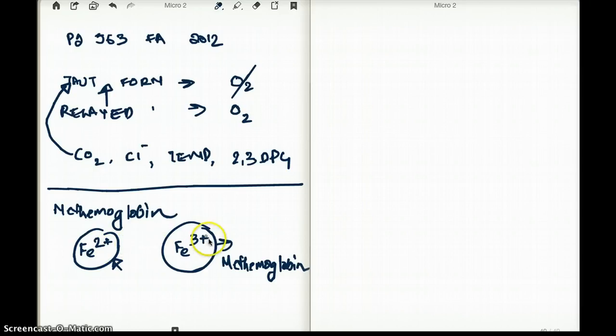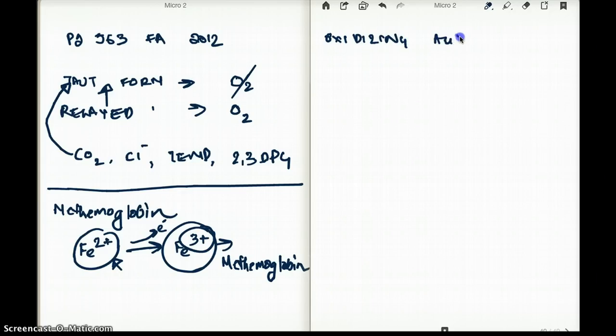Now you can see that it has an extra positive charge. That is, it has lost an electron. An electron has left it. And what causes an electron to disappear? What steals electrons? What steals electrons are oxidizing agents. Nitrites and nitrates are famous for stealing electrons. So those substances are going to steal this electron and convert methemoglobin.